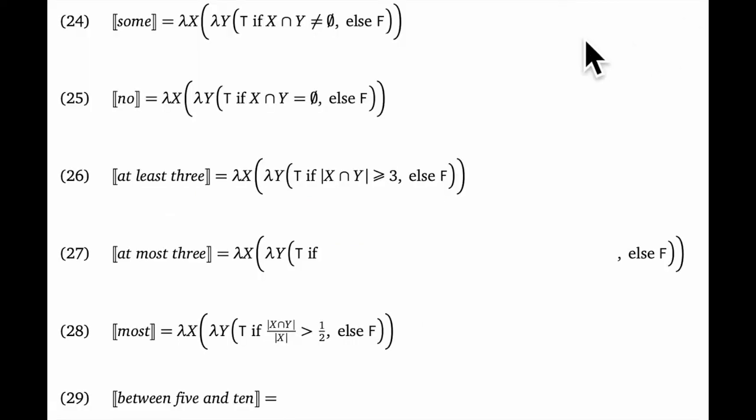Let's look at some. It's the same pattern, a function that takes two arguments, both sets, and relates them in some way. Here for some, we say that the intersection of the two set arguments is non-empty. In other words, we evaluate whether there's an entity a that has both properties x and y.